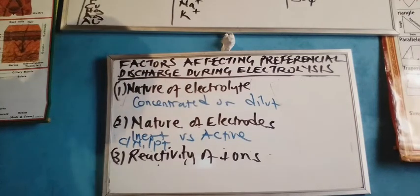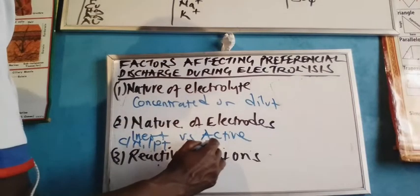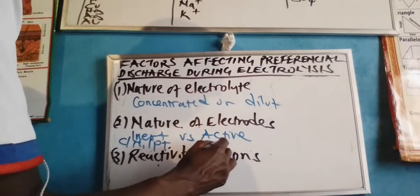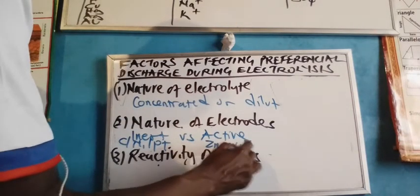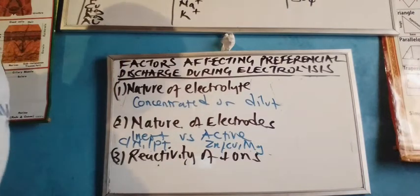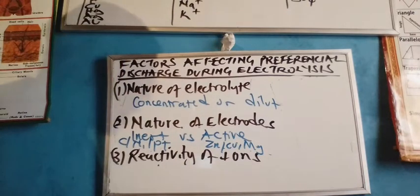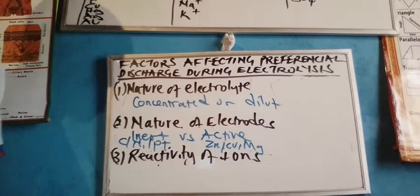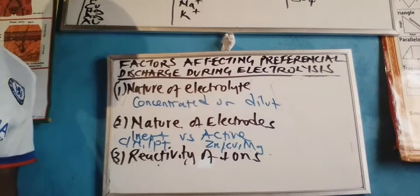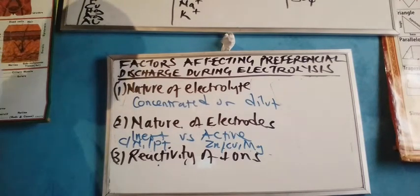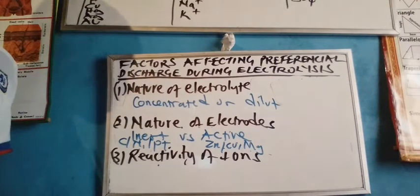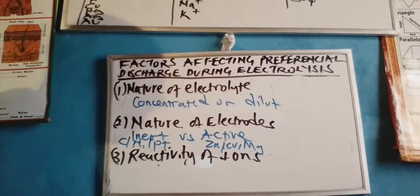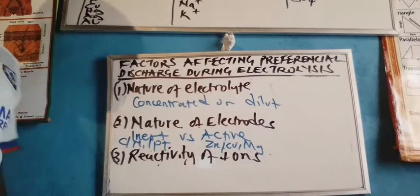If, on the other hand, we look at active electrodes — for example zinc, copper, magnesium, or any other metallic element which is not inert — then we expect that they will affect the preferential discharge of ions, in the sense that when the electrode is active, it competes favorably with the ions present in solution.